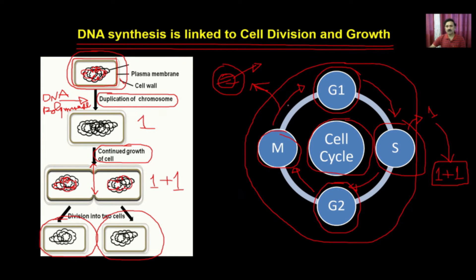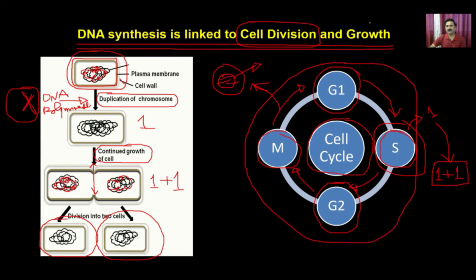From these two examples, we understand that if you remove DNA polymerase from the exercise, it halts cell division and growth. In the S phase of eukaryotes and during chromosome duplication in bacteria, DNA polymerase is very active. DNA polymerase is essential because it contributes to the duplication of genomic DNA content.